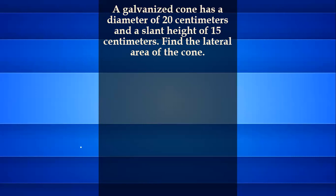To find the lateral area of a cone, the formula is lateral area equals pi times the radius times the slant height. We don't have the radius.